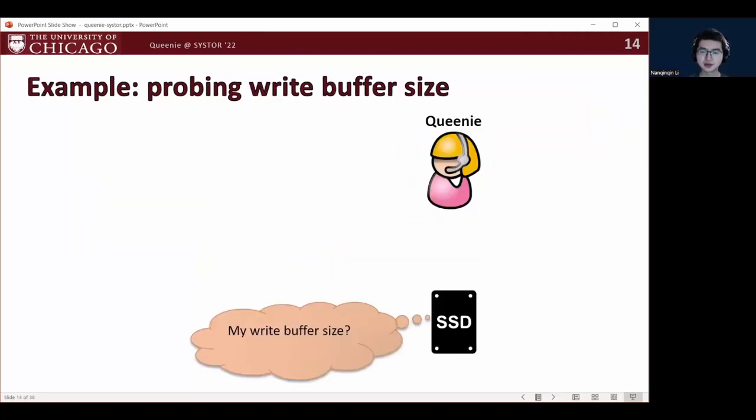Now, let us use white buffer size as an example. To probe this property, QINI uses an intensive sequential write workload to isolate buffer flush activities.